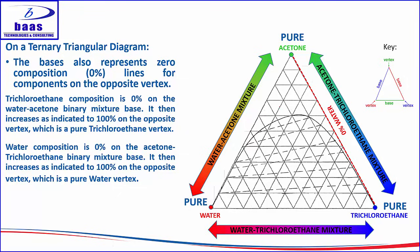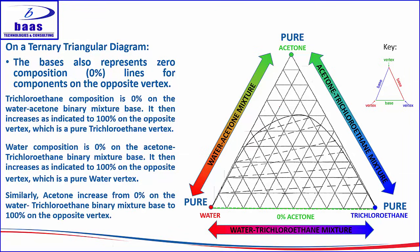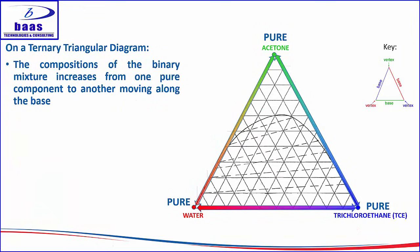On the acetone-trichloroethane side, you have the zero percent water line, since water is on the opposite vertex, and the composition of water increases as you move towards the water vertex. Similarly for acetone, on the water-trichloroethane binary base you have a zero acetone composition line, and the composition of acetone increases as you move toward the pure acetone vertex. The composition of binary mixtures increases from one pure component to the other as you move along the base.